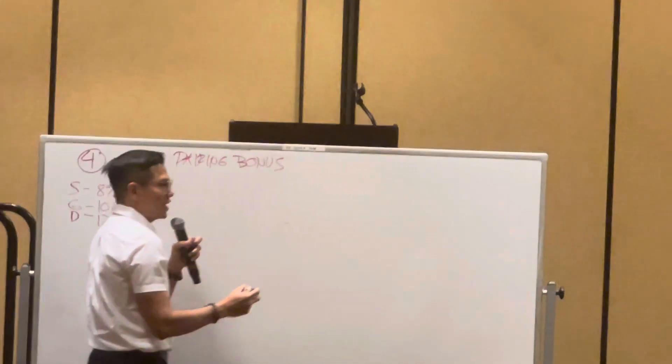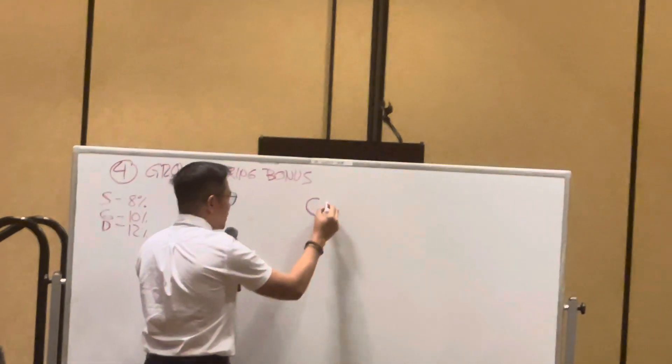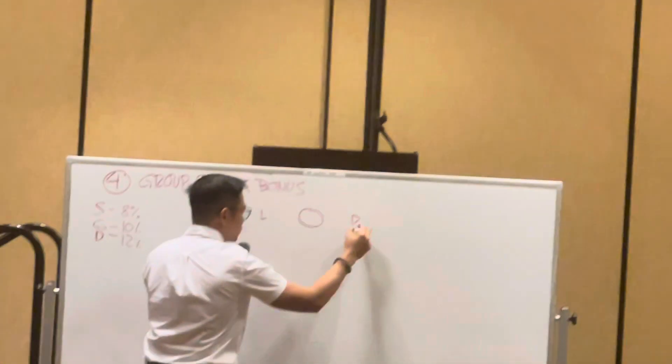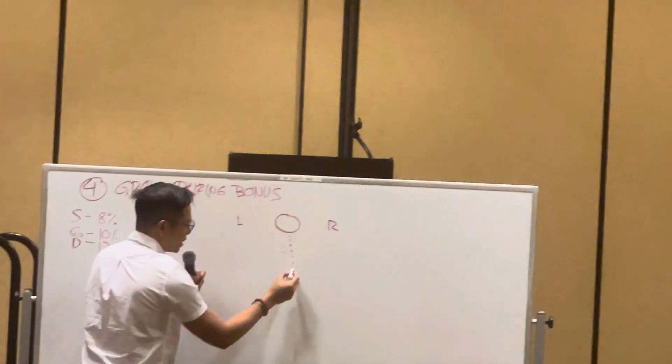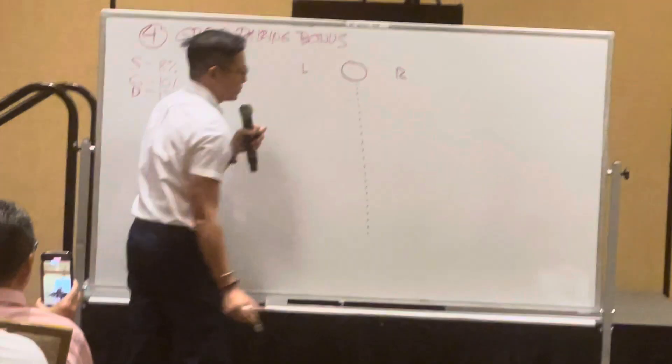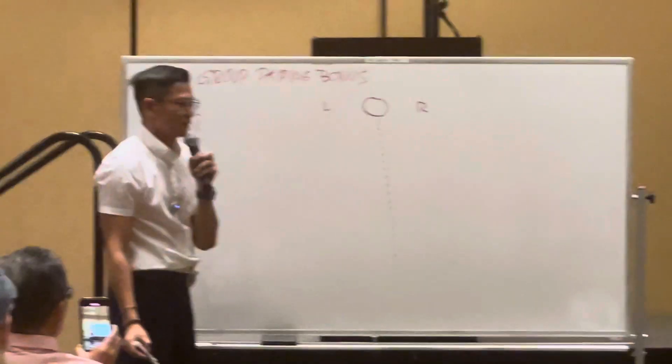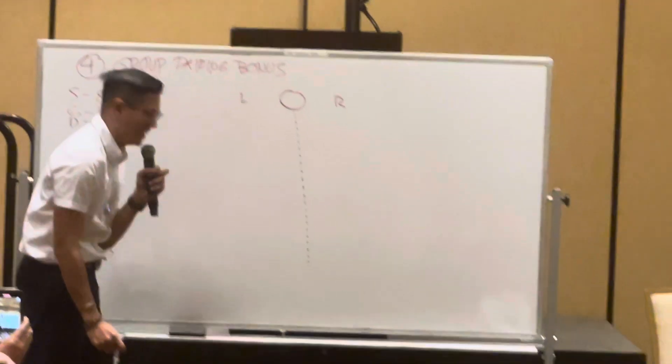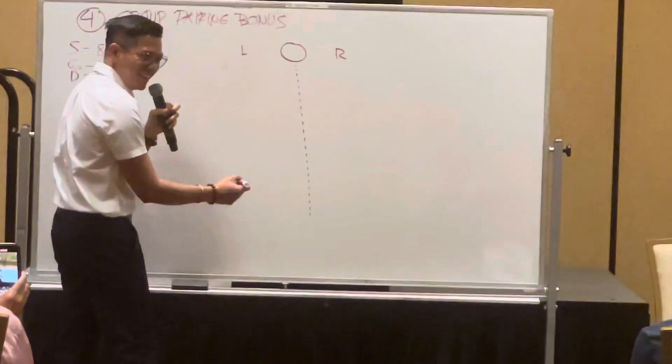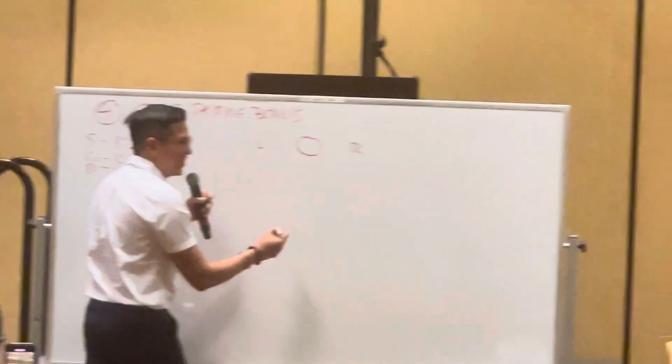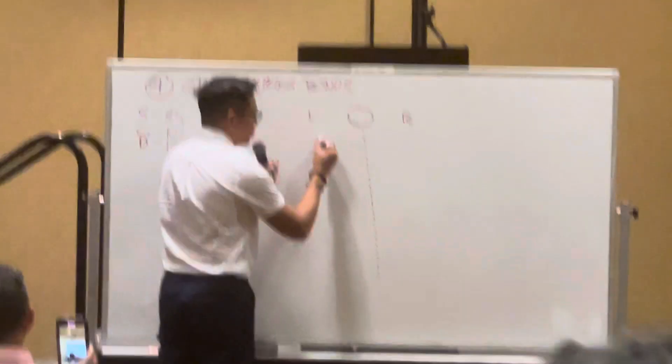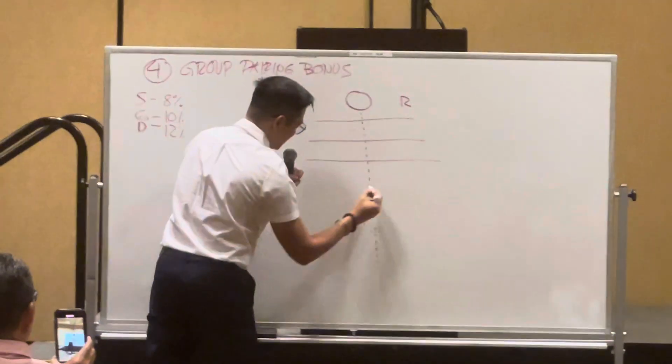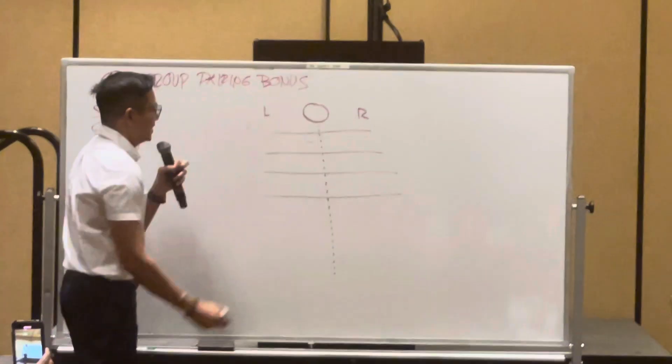Group Pairing Bonus. Now again, this is a binary system. This is the main account. So I'm talking about this account. This account has a left group and a right group. There is an imaginary line. So we've got the first level, second level, third level, fourth level. Are you following me? Yes.